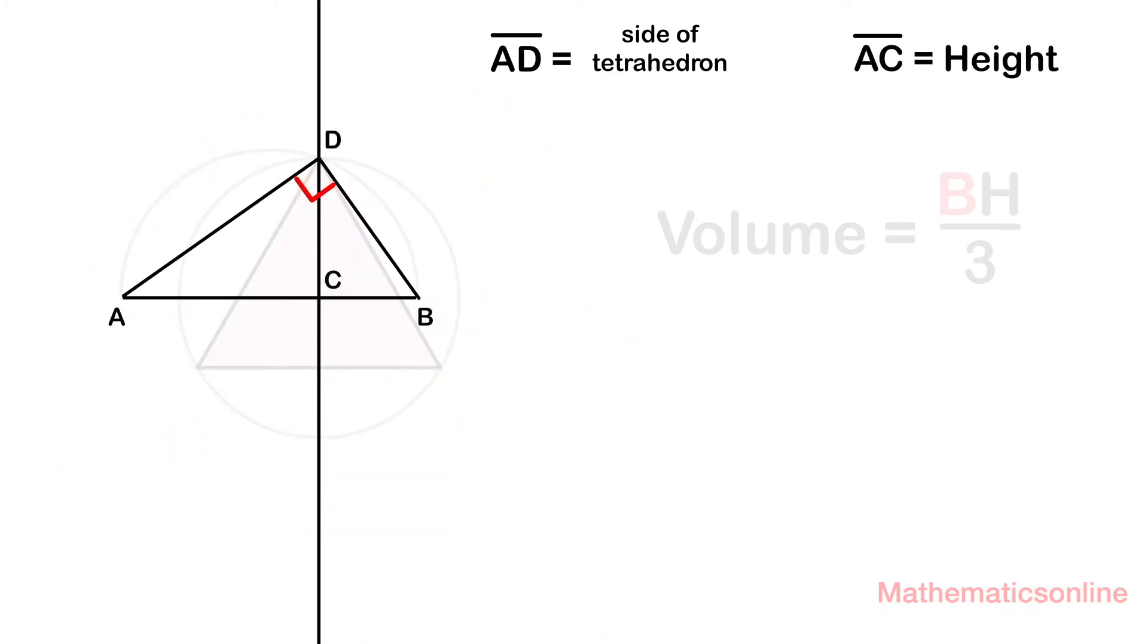To simplify this derivation, we are going to label AD as a, AC as x, and CB as y. Therefore, the side of the tetrahedron is a and the height is x.